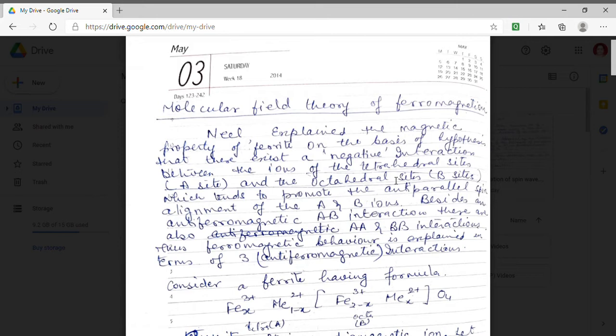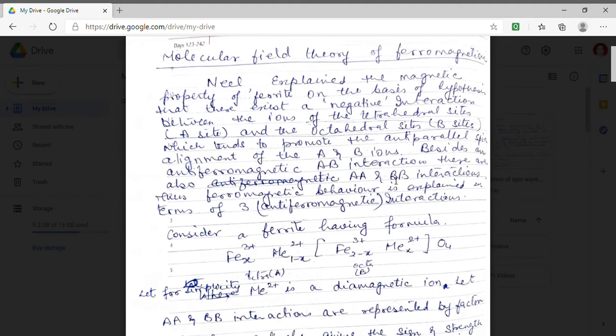I am considering the general form of ferrite which is iron which is a trivalent in state concentration being X and divalent metallic iron let its composition be 1-X and these two ions they are on tetra site.